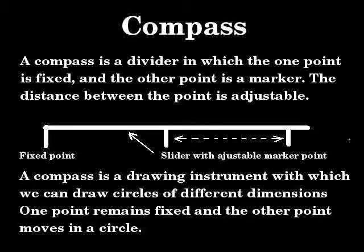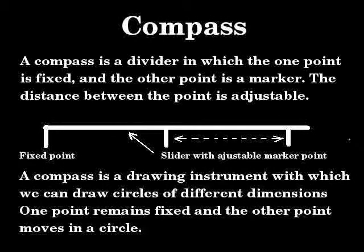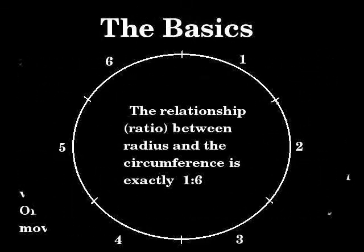How do we draw a circle? We use a drawing compass. A compass is a divider in which one point is fixed and the other point is a marker; the distance between the points is adjustable. It is a drawing instrument with which we can draw circles with different diameters — one point remains fixed and the other point moves in a circle. When we draw a circle with a compass, we discover that the radius remains constant and subdivides the circle exactly into six equal segments.